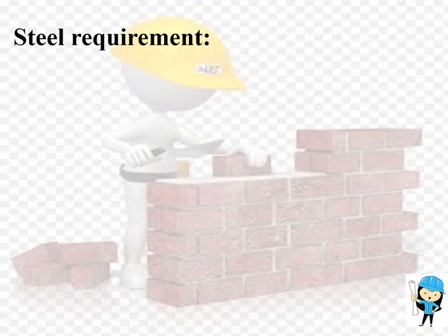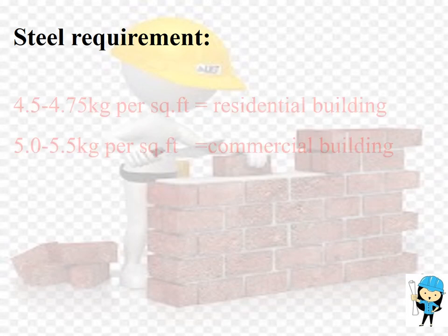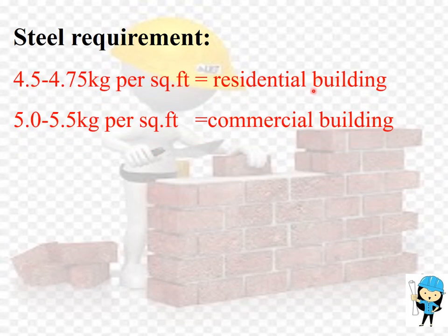Now we are going to calculate the amount of steel required for construction. We have framed two thumb rules for steel calculation — one is for residential buildings and another one is for commercial buildings. For residential buildings, the amount of steel required per square feet is 4.5 to 4.75 kg. For commercial buildings, it is 5 to 5.5 kg per square feet. These two thumb rules are only an approximate method. To find an accurate steel quantity, we can follow the BM Dutta recommendation.